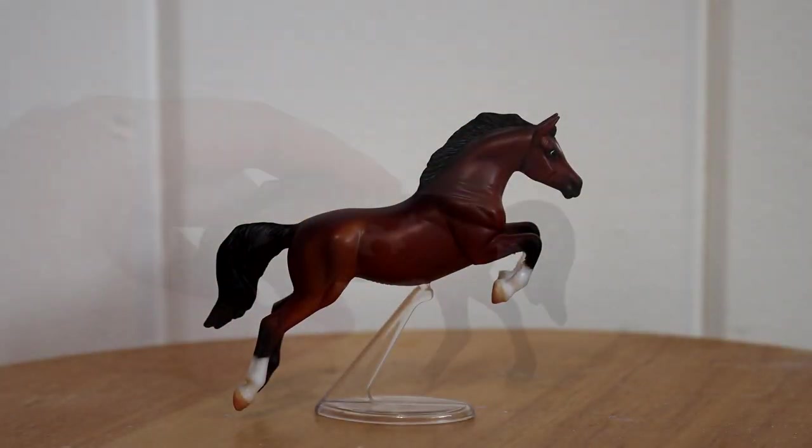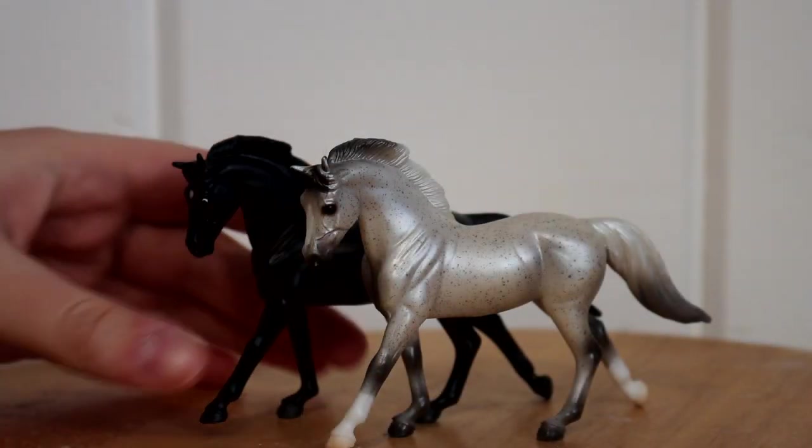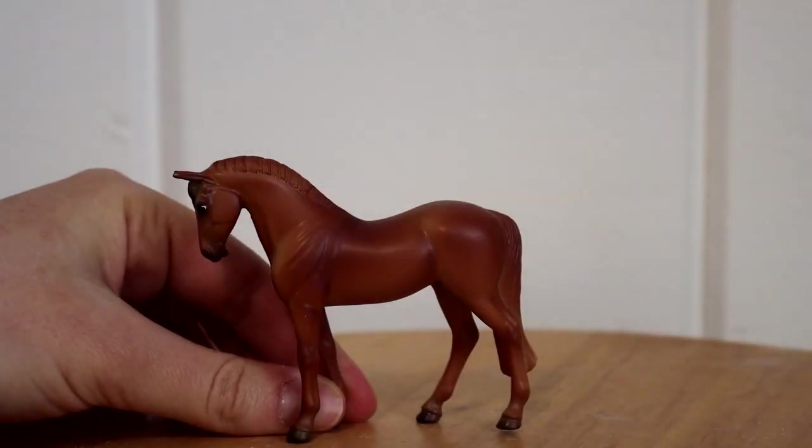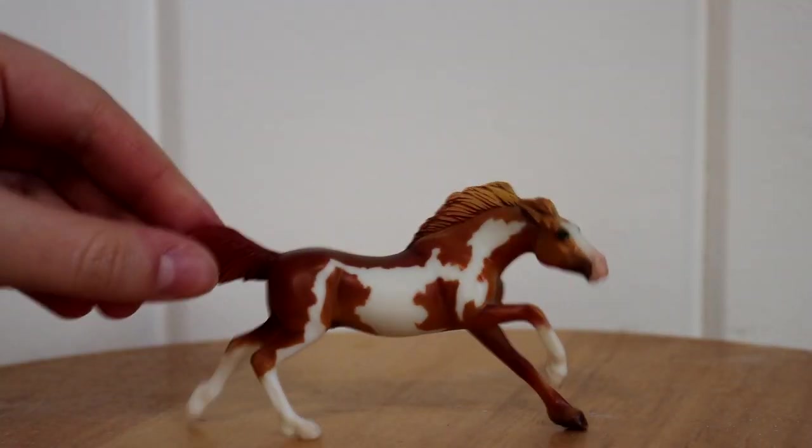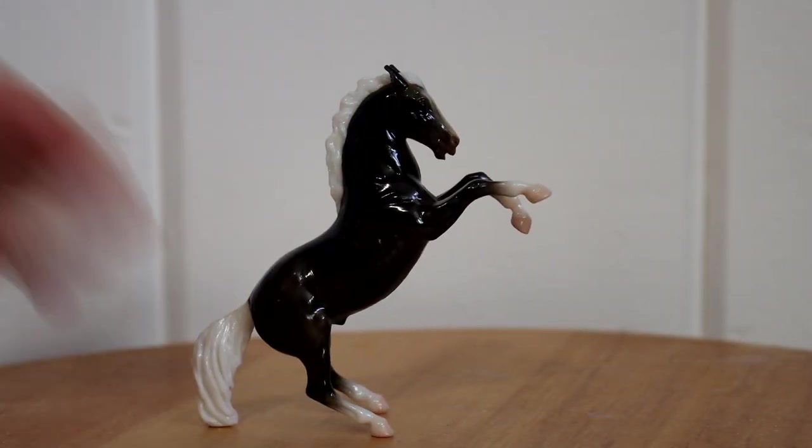I've chosen this jumping mold, this mustang mold, two of these warmbloods because I really like the face and legs on the sculpt. I have a standing Thoroughbred, a running mustang, an Arabian, and the new 70th anniversary rearing stallion.